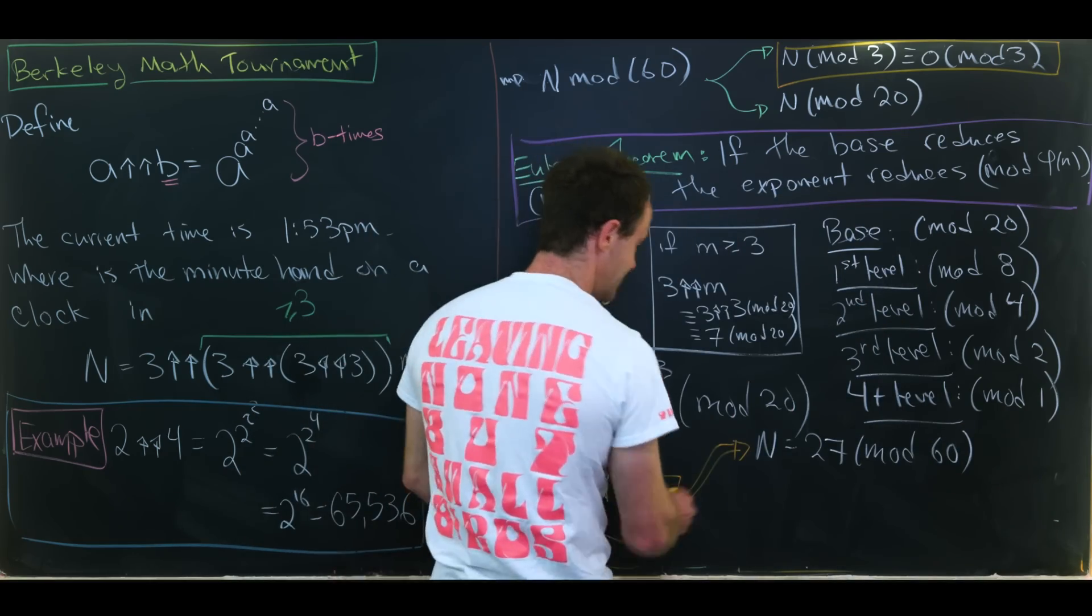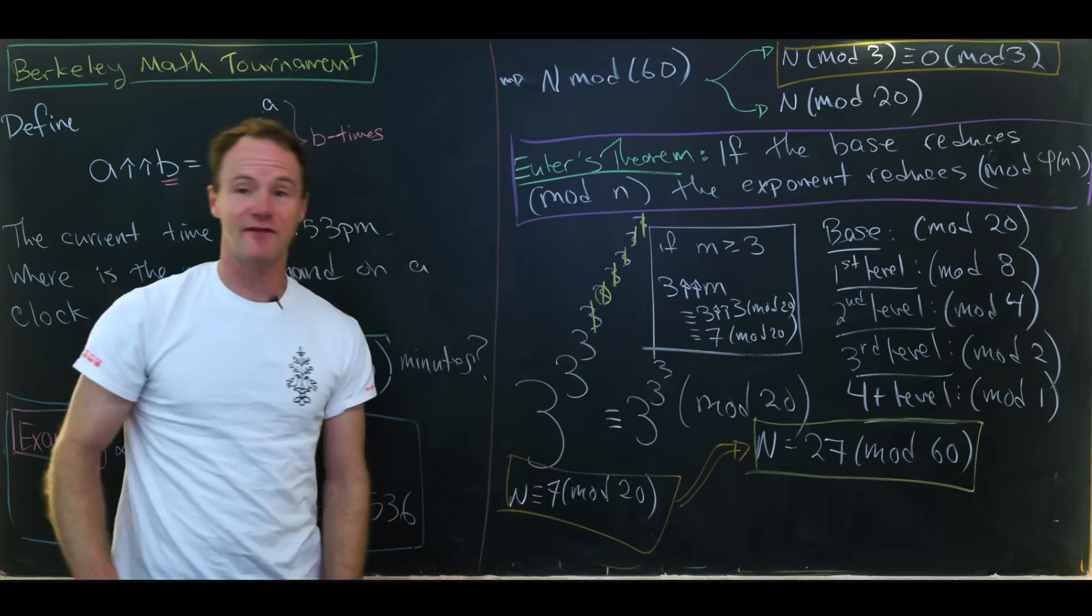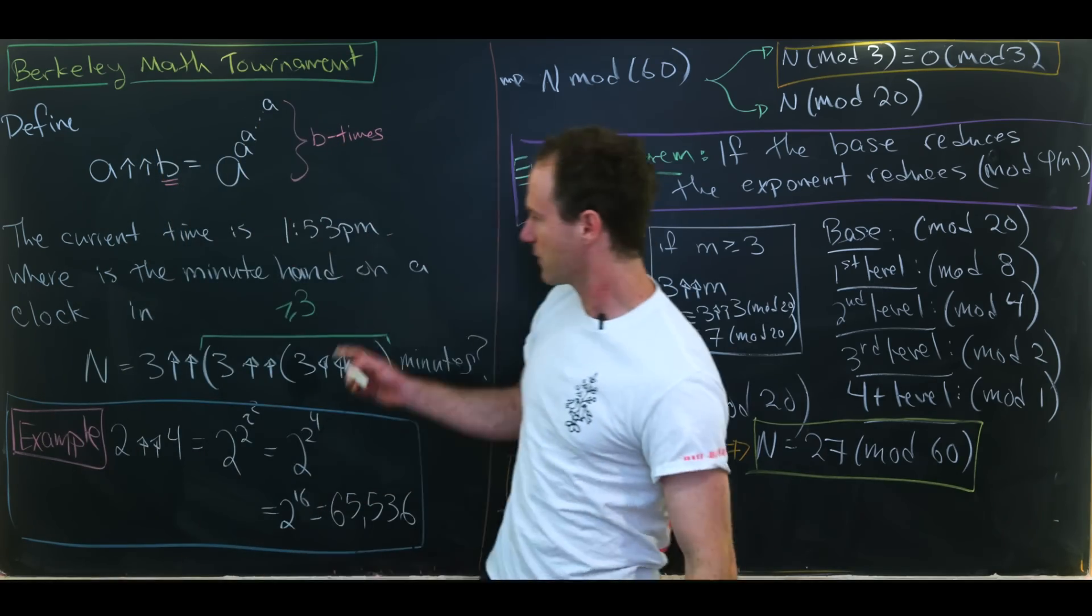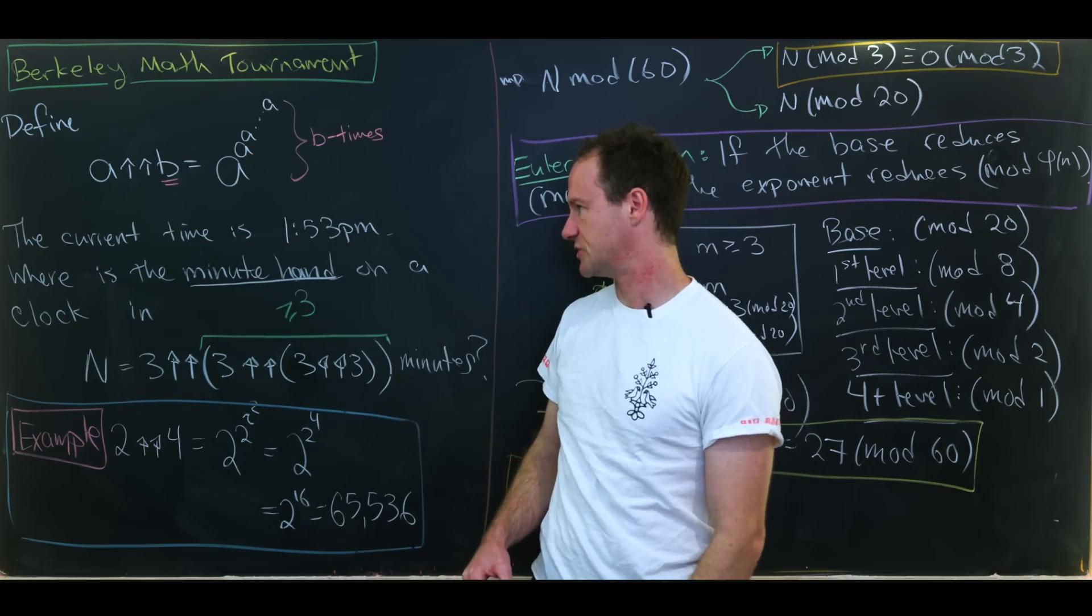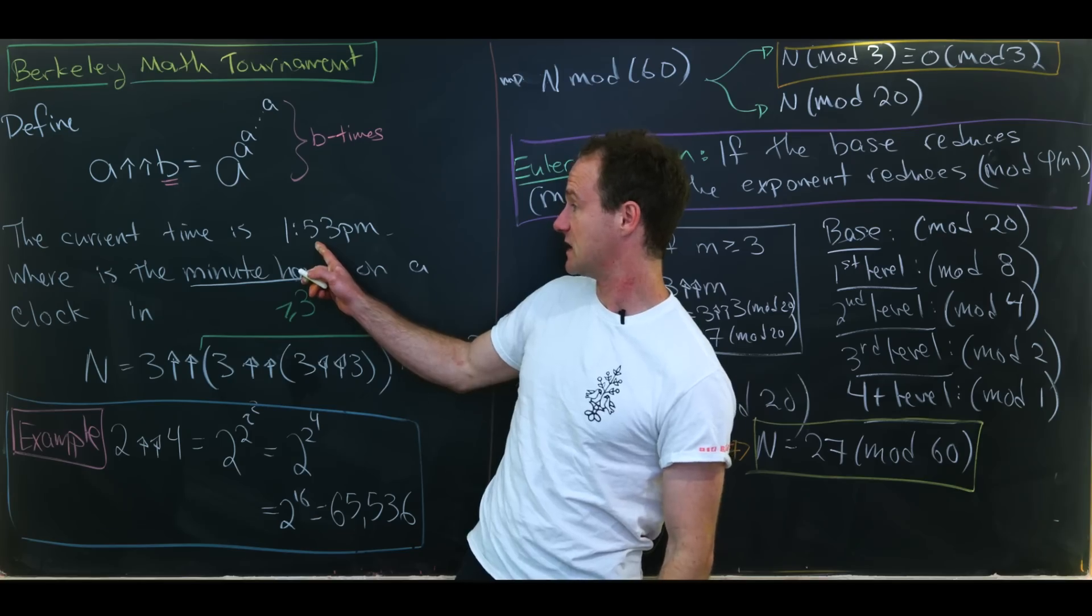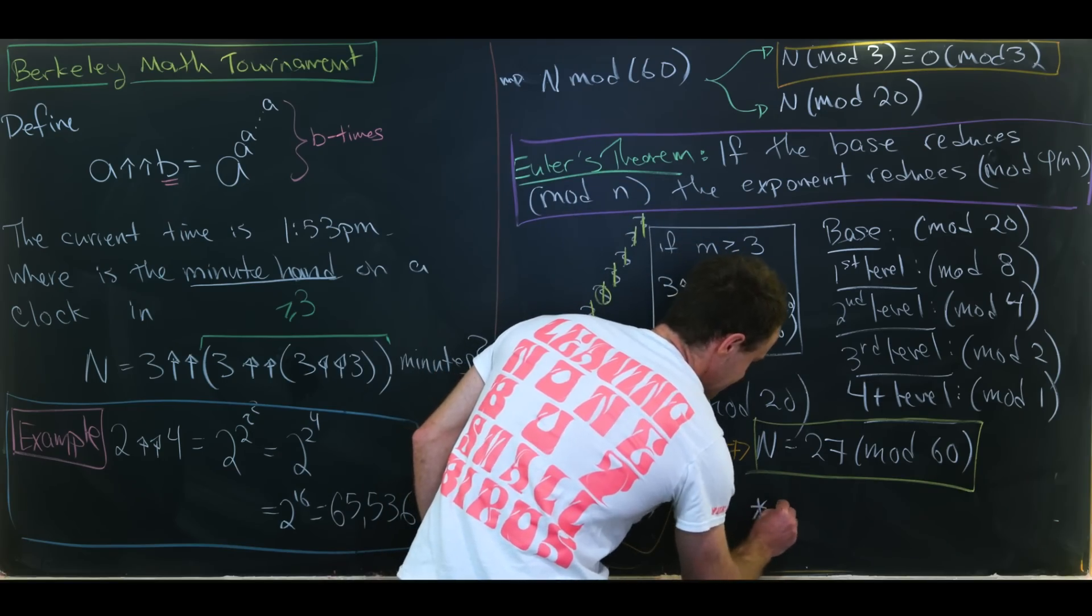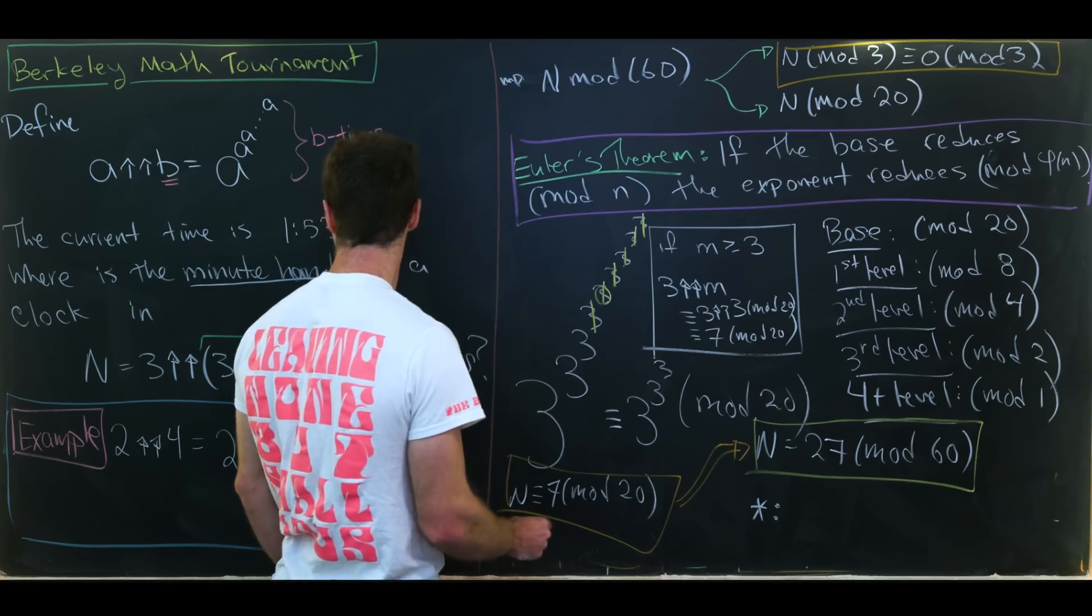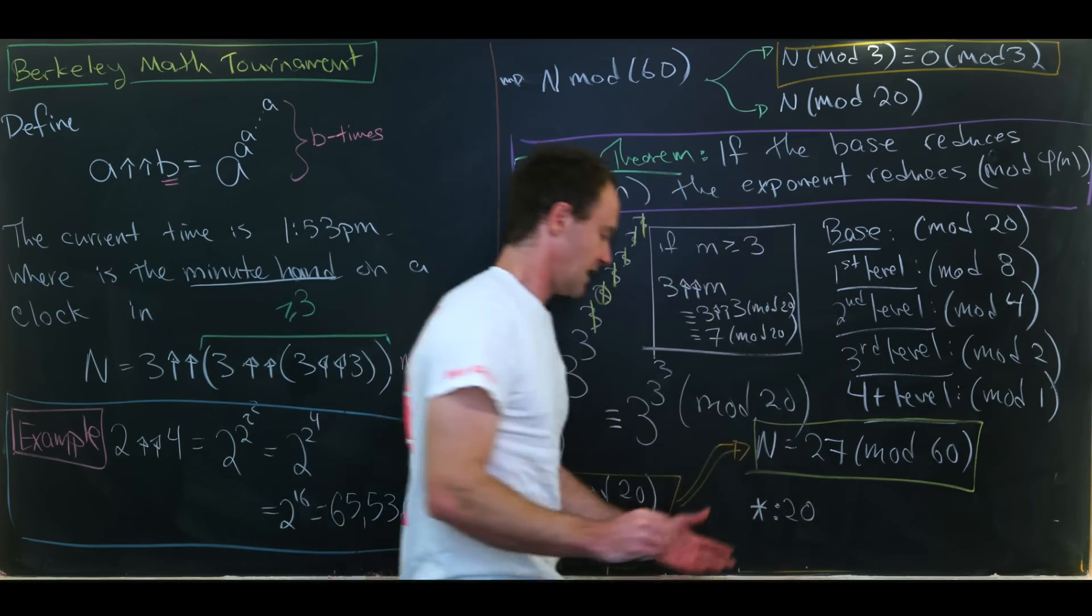Great. So that means that the clock looks like only 27 minutes have elapsed if maybe this clock didn't have an hour hand or if we were only paying attention to the minute hand which is exactly what we're doing. So if the minute hand moves 27 minutes from 1:53, that means that minute hand looks like this. So I'll just put an asterisk for the hour. We don't care about that. And then this will be 20.